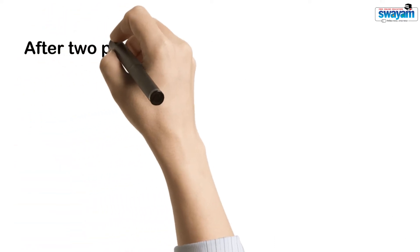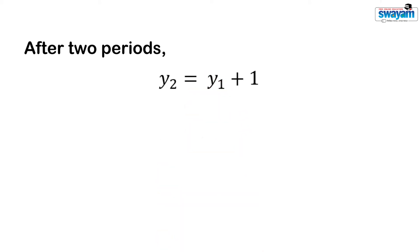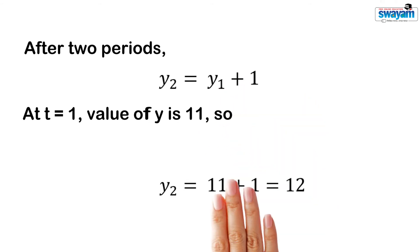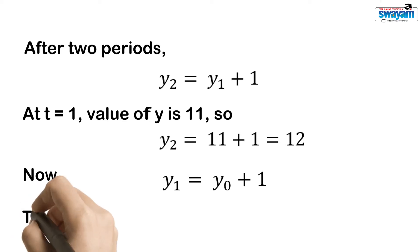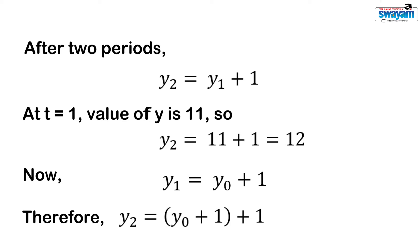Similarly the value of y after two periods will be y2 is equal to y1 plus 1. Since the value of y1 is 11 we get y2 equal to 12. Now y1 is equal to y0 plus 1, so we can write y2 is equal to y0 plus 1 plus 1, or y2 is equal to y0 plus 2. Since we know the value of y at t equal to 0, we can easily find the value of y at t equal to 2.